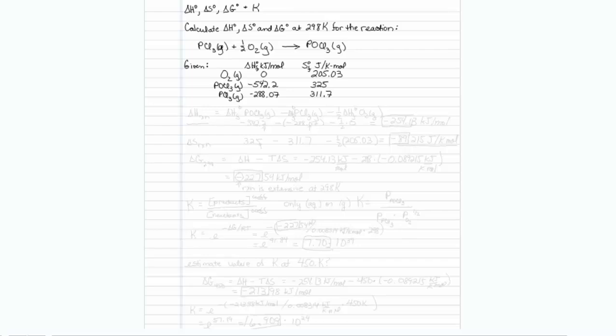This is how delta H, delta S, delta G, and K are all related. We're asked to calculate delta H, delta S, and delta G at 298 K for the reaction shown.